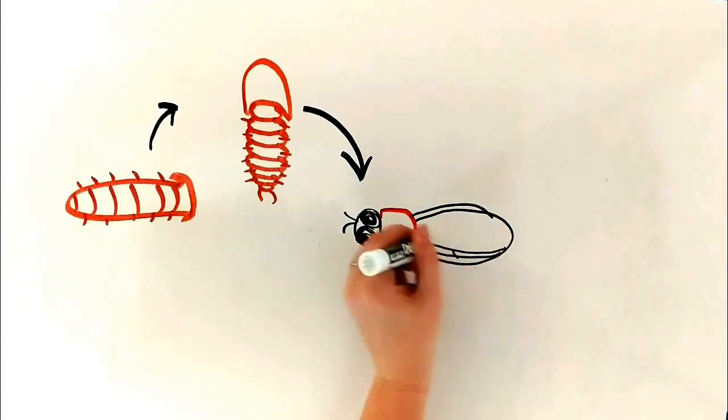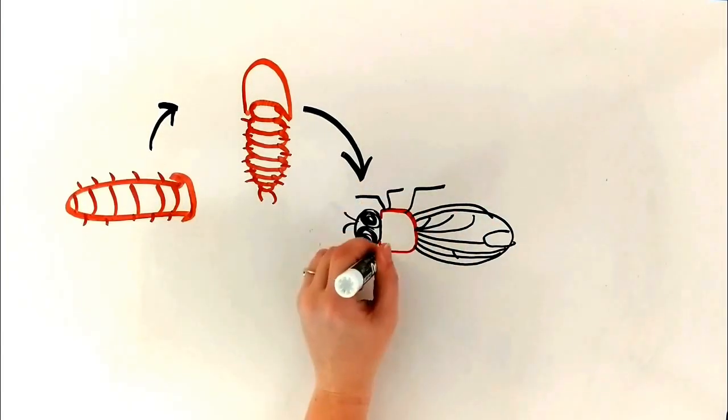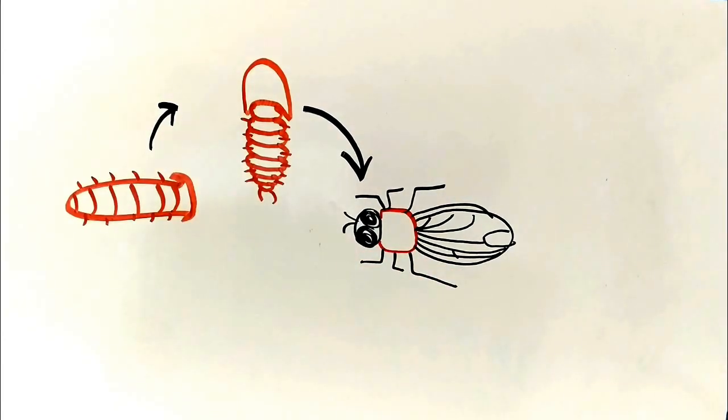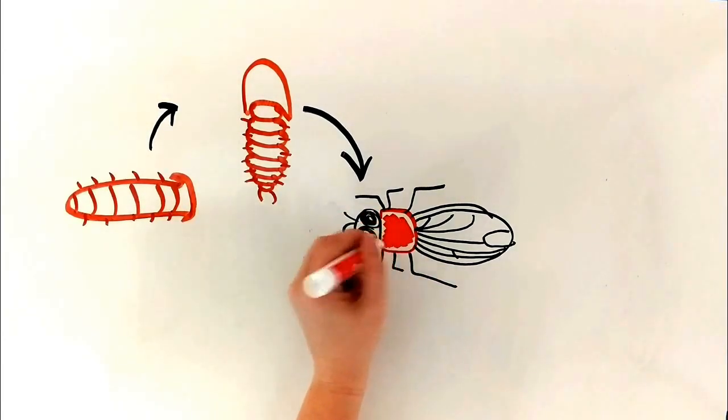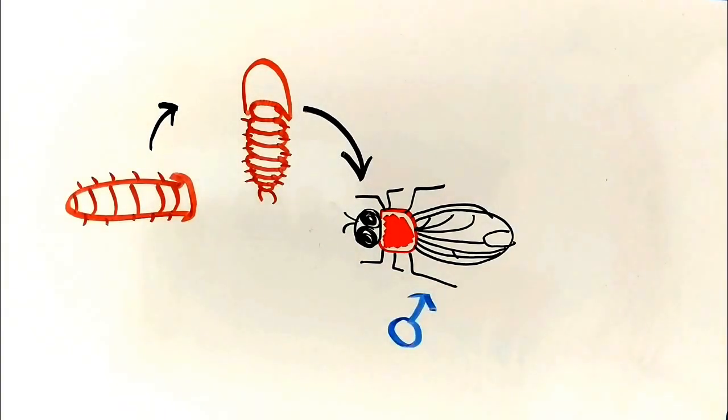Love bugs are a kind of fly, which makes their immature form maggots. The larvae develop into pupa and approximately one week later will emerge as adults. The male love bugs will emerge first.